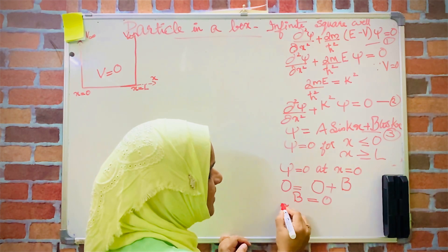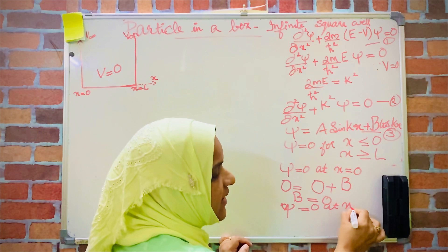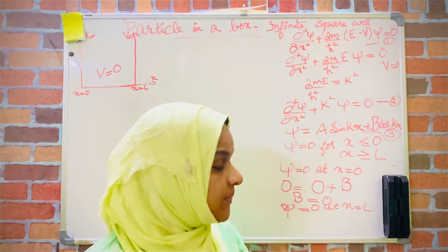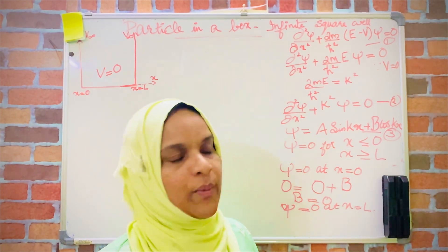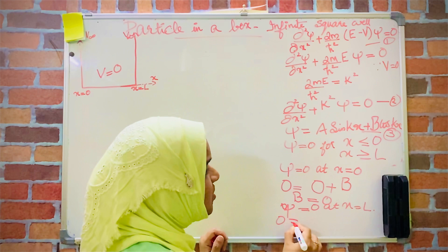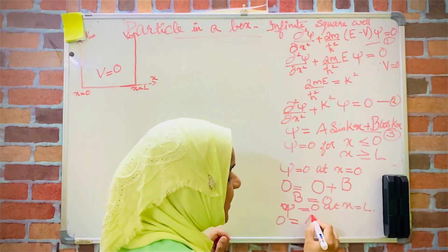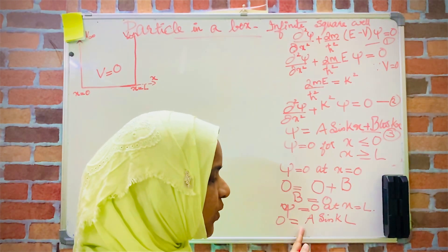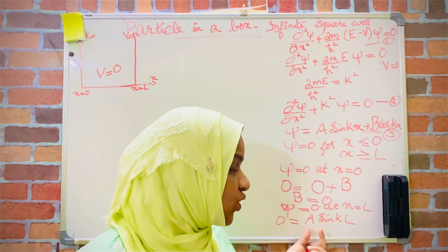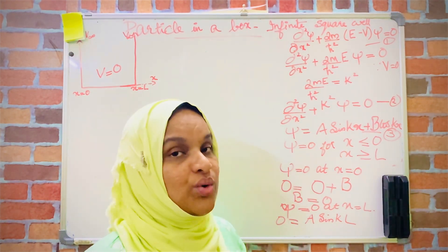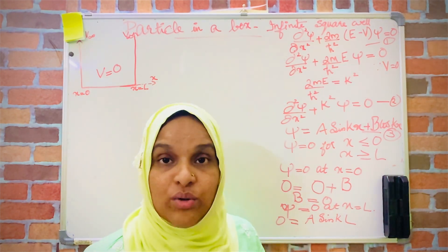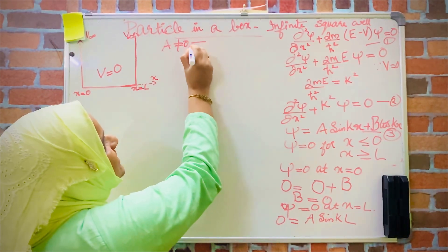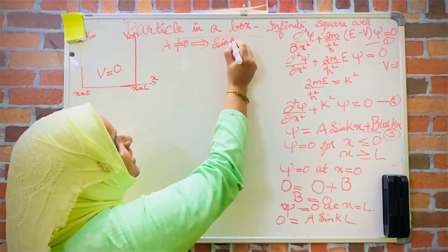Now we apply the second boundary condition: ψ=0 at x=L. With B=0, equation 3 becomes 0 = A sin(kL). Since A cannot be equal to zero — if A=0, our solution vanishes and becomes invalid — we require sin(kL)=0. Therefore, A≠0 implies that sin(kL) must equal zero.